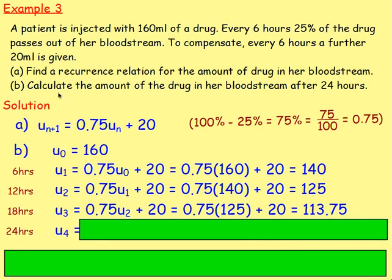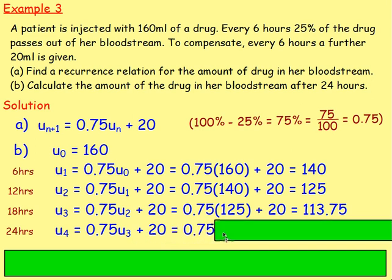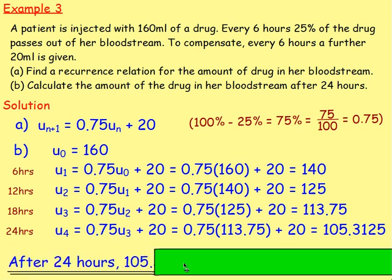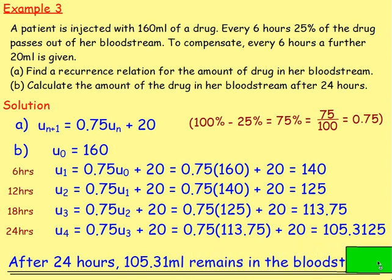After 24 hours, u4 = 0.75 times u3 plus 20, so 0.75 times 113.75 plus 20, giving 105.3125. Obviously there are too many decimal places, so after 24 hours there will be 105.31 millilitres remaining in the bloodstream — you can round to one or two decimal places.